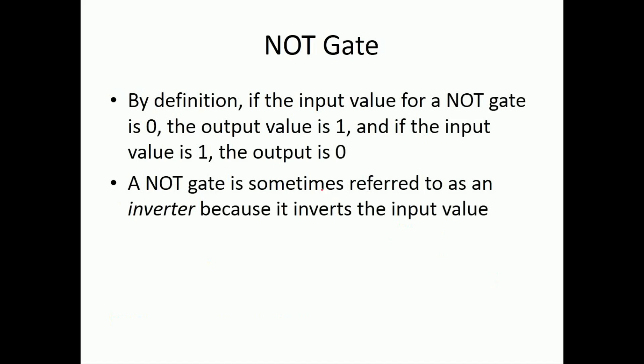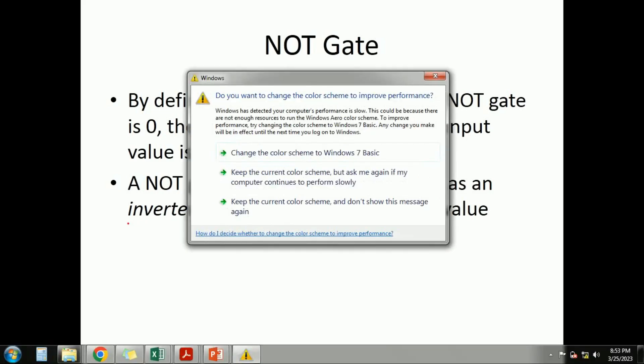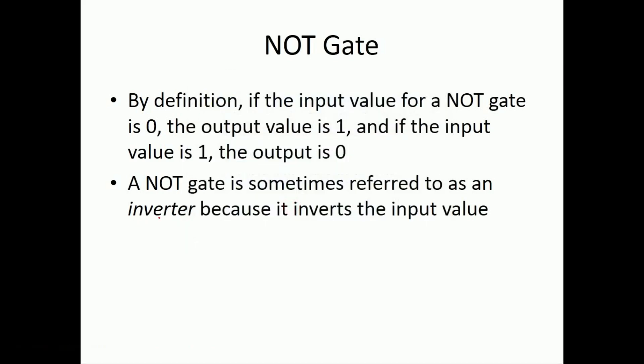By definition, if the input value for a NOT gate is 0, the output will become equal to 1. Similarly, if the input value is 1, the output becomes equal to 0. It is also referred to as an inverter because it actually inverts the input value.